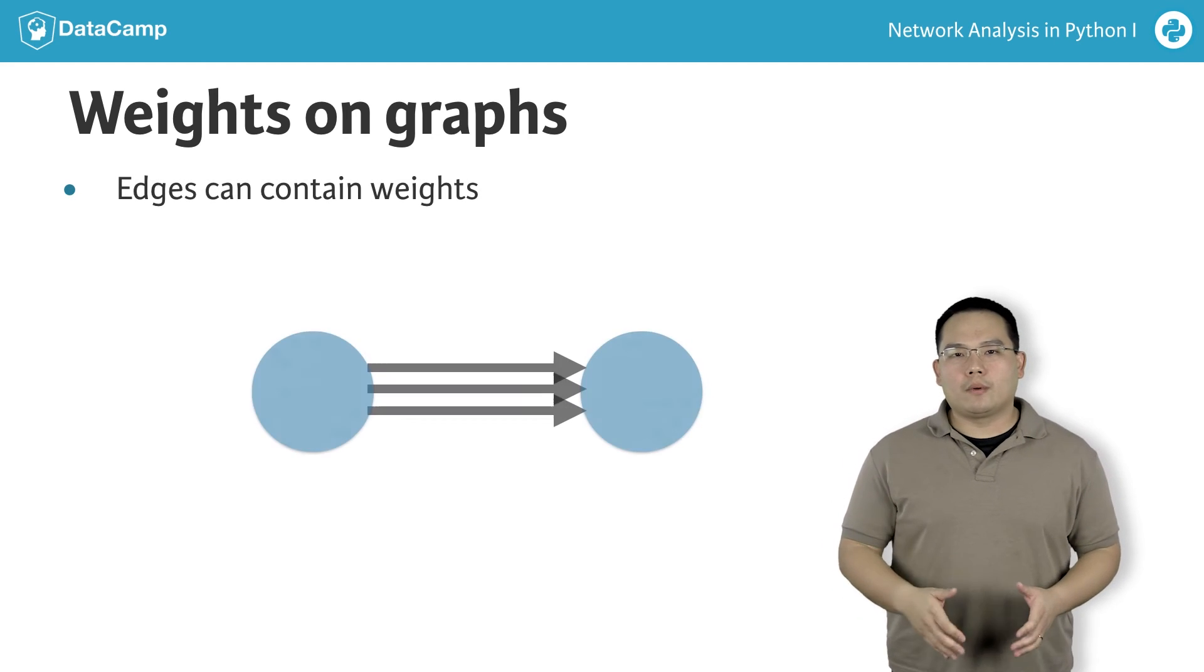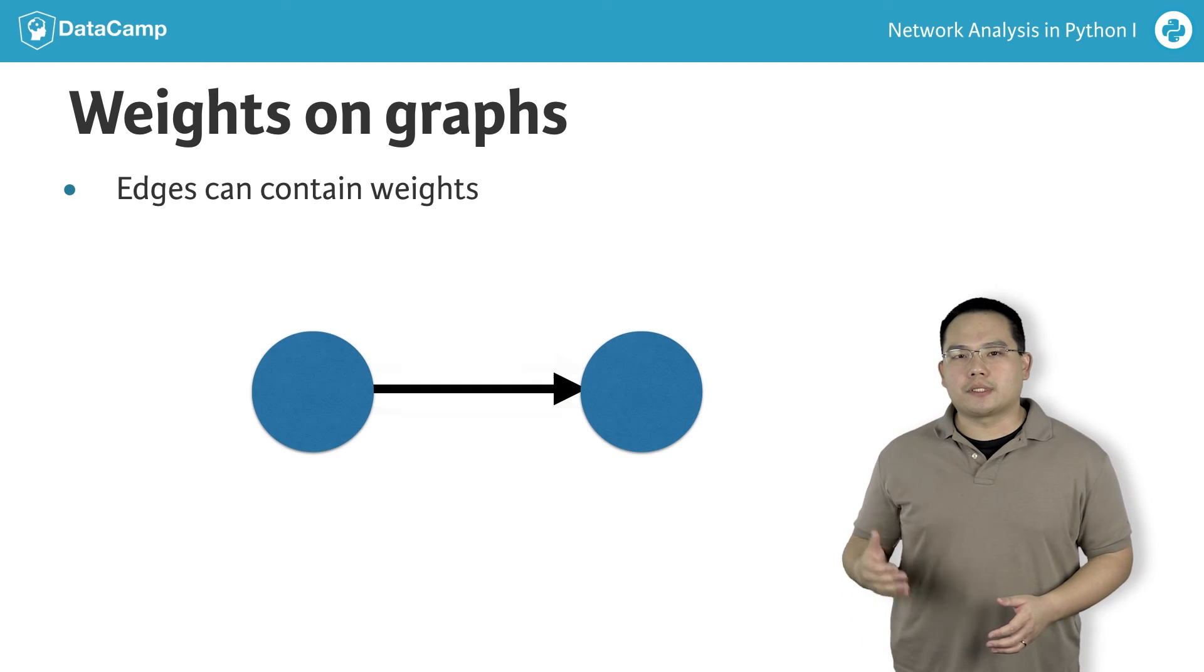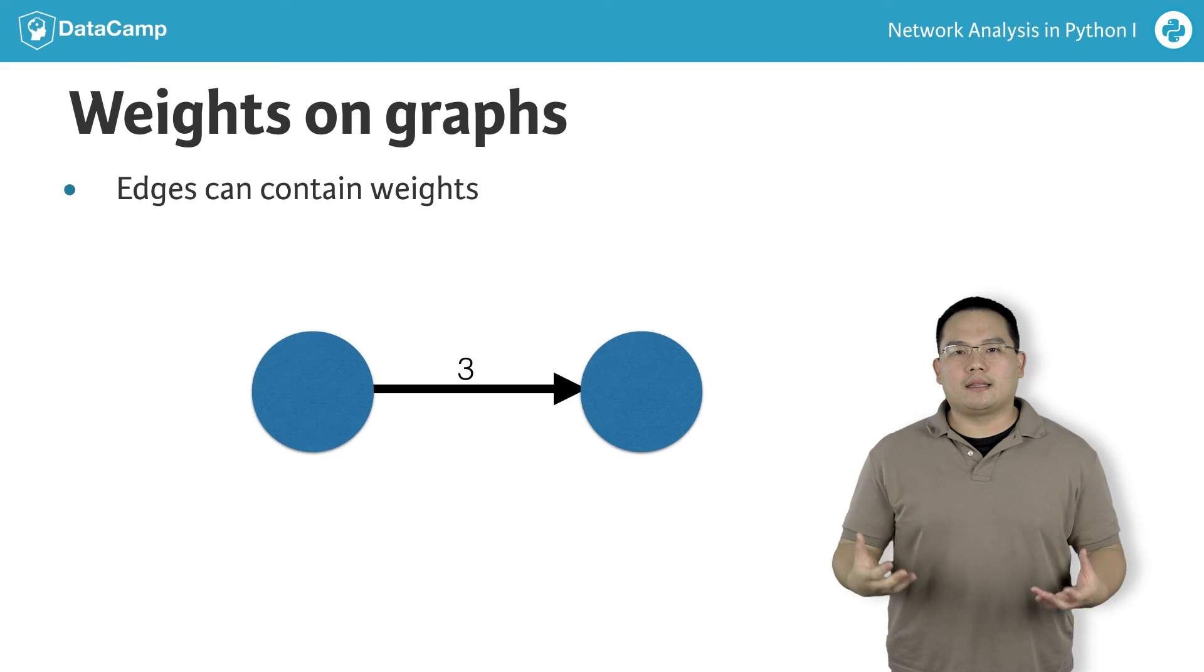For example, we may want to collapse these three edges into a single one and give them a weight metadata with the value 3, indicating that it was originally three edges between the pair of nodes.